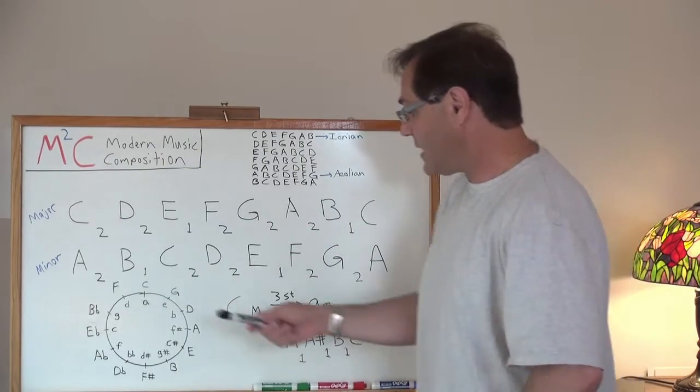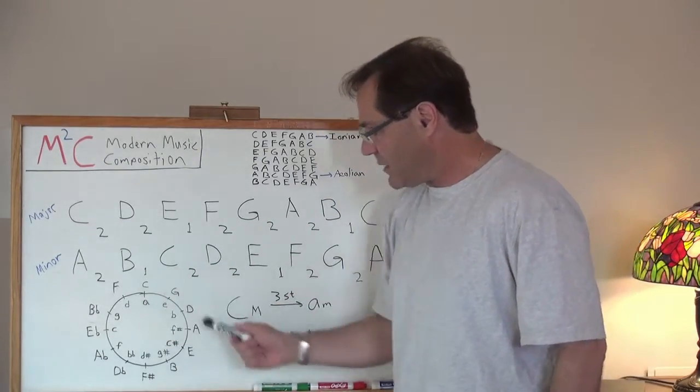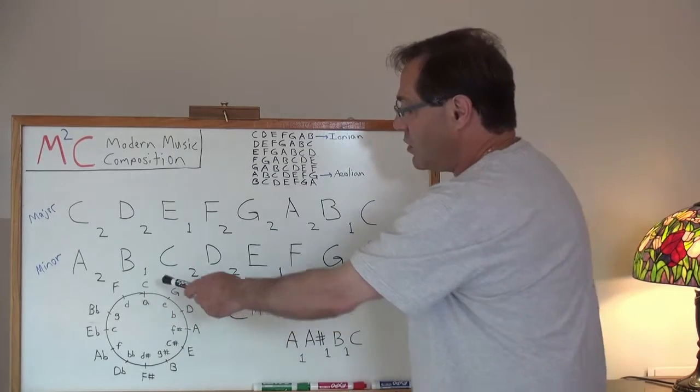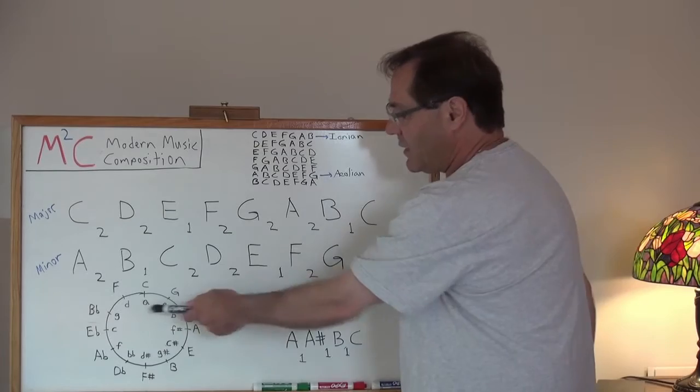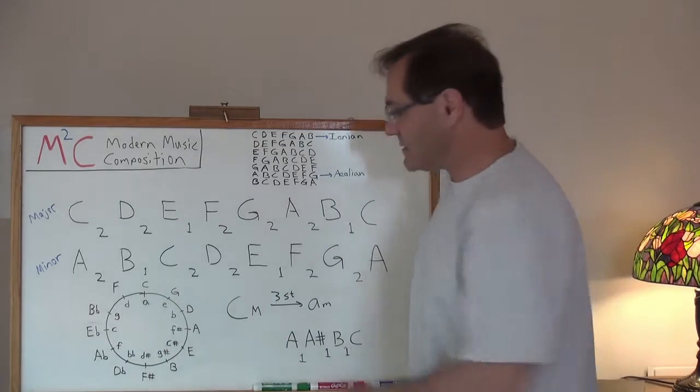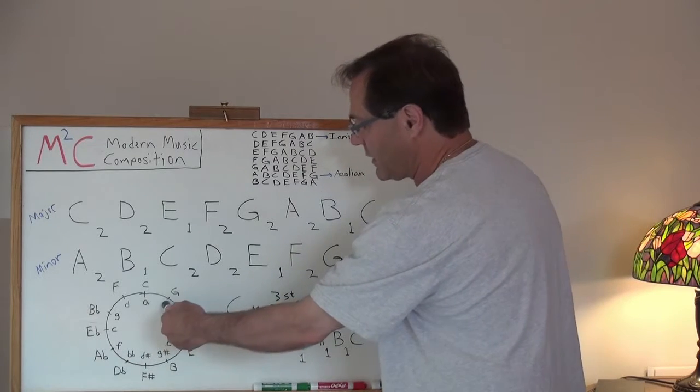Well, it's easy. You take the circle of fifths, which I've got written down here, and for any major scale, you can easily calculate what its relative minor is by looking at the minor circle of fifths. That's written on the inside in lowercase.